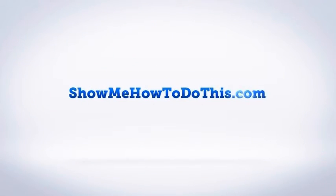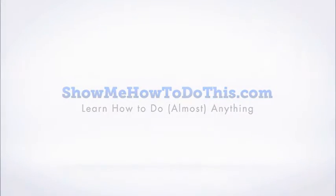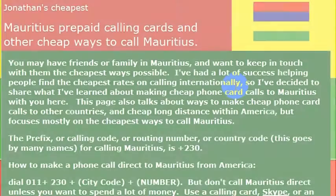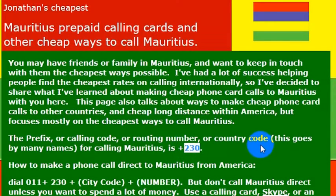When I lived in New Zealand I had a co-worker who was from Mauritius. She became a good friend and we stay in touch. If I wanted to call her directly using an internationally enabled landline, I would just need to know the country code. The country code for Mauritius is 230.